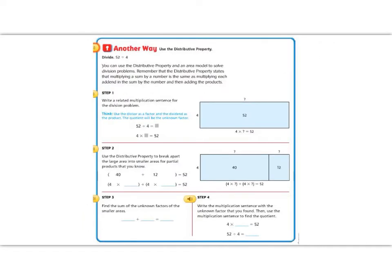Another way to divide using inverse operations, multiplication, and division is using the distributive property. We've talked about the distributive property before. It means to pass something out. So in this example, we're going to divide 52 by 4. Let's read our directions. You can use the distributive property and an area model to show a division problem. Remember that the distributive property states that multiplying a sum is the same as multiplying each addend by the sum, and then adding the products together. So in this example, we have 52 divided by 4 equals a box. So that must mean that 4 times the box equals 52.